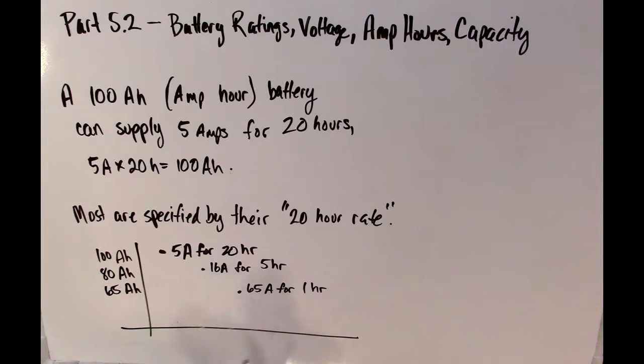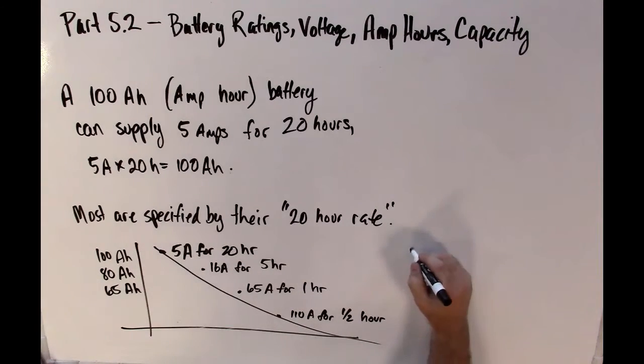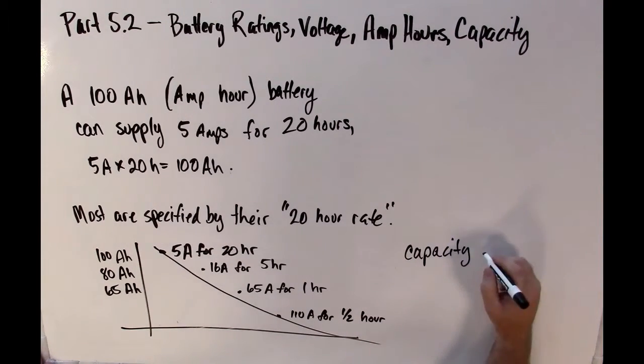But if I take that same 100 amp hour battery and discharge it at a faster rate, such as at 16 amps, or 65 amps, or 110 amps, what I'll see is the overall capacity will decrease. It won't hold as much charge if I take the charge out at a faster rate.